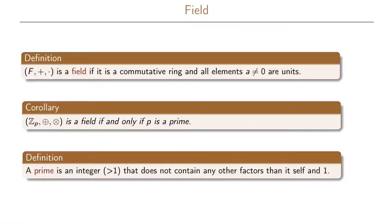The last algebraic structure we're going to look at is the field. The field is defined as follows: the set of elements we call F, with two operations called addition and multiplication. This is a field if it is a commutative ring and all the elements that are non-zero are units.